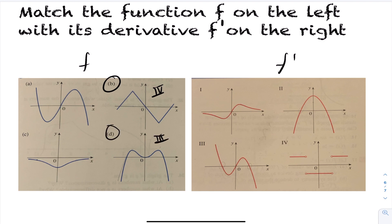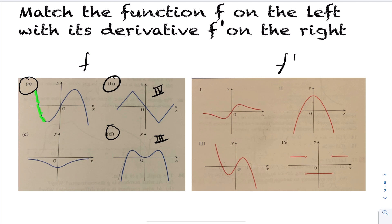For graph a, we have two spots where the tangent line has a horizontal slope — a slope of 0. Looking at graph 2, there are two spots where the derivative is 0. The slopes of graph a are negative, becoming less steep until hitting a slope of 0, then continue in the positive direction — illustrated by the derivative being below then above the x-axis — until hitting a slope of 0 again, then continuing on. So graph a matches with graph 2.